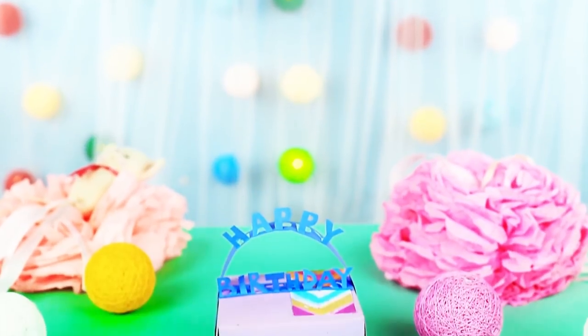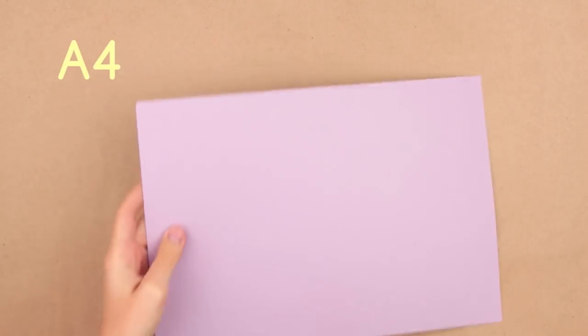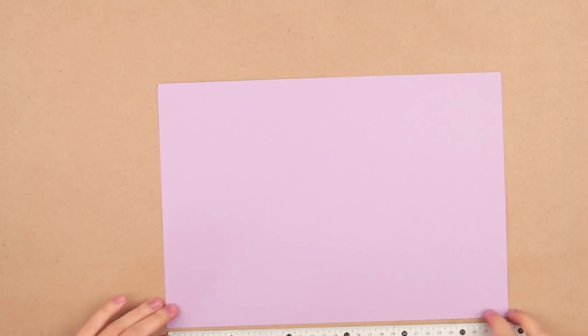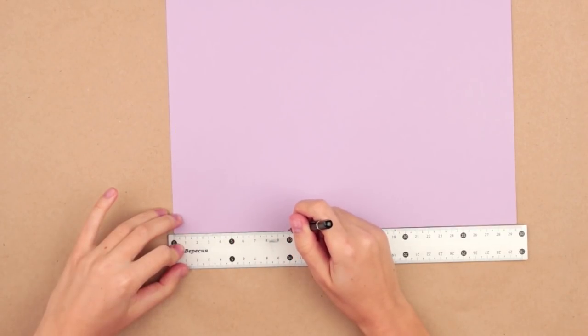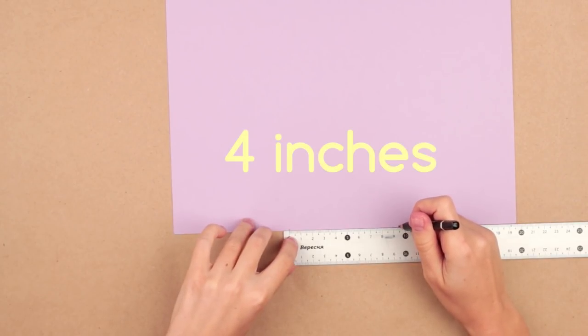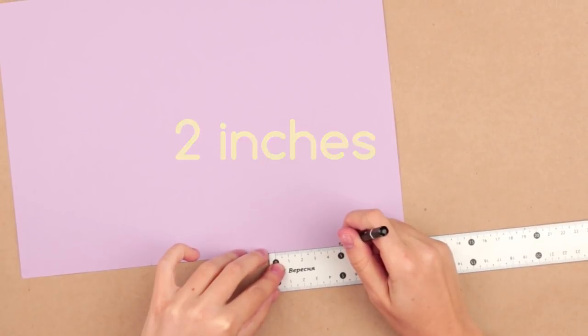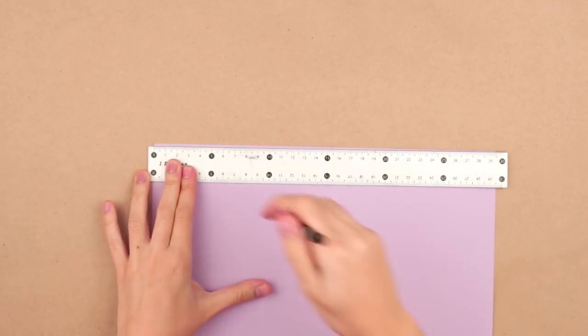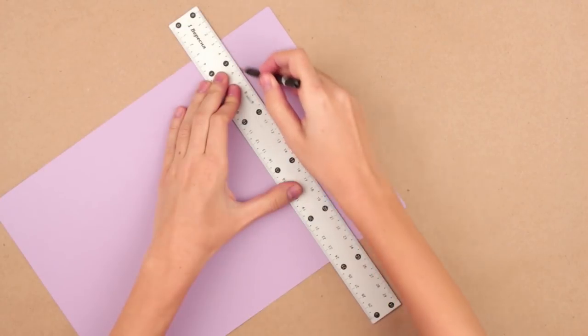Our today's video is about how to make a happy birthday gift box. Lay A4 card stock horizontally and measure out 2 times per 2 inches from the left edge. Then 4 inches more. And again twice per 2 inches. Repeat for the opposite side. Join the marks.